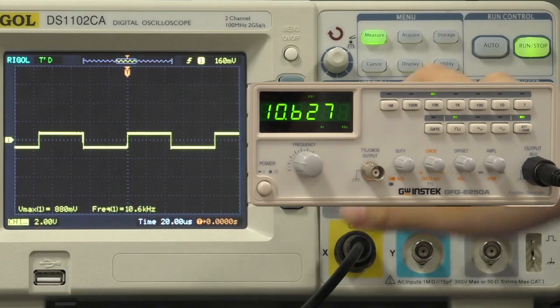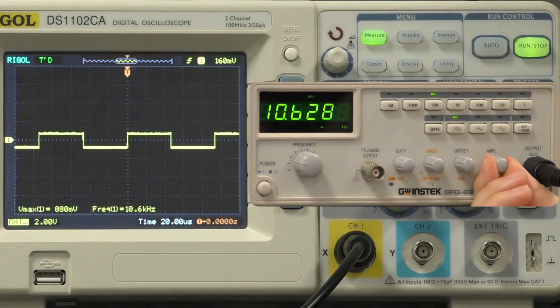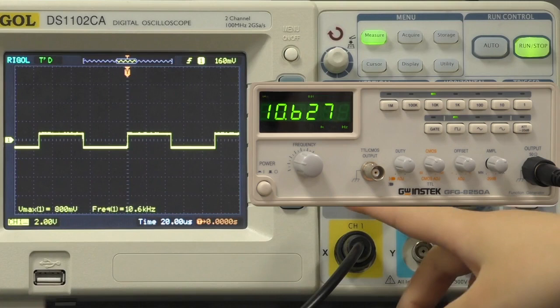What you can also do is the amplitude button, just pull it out. Once you pull it out, that will do exactly the same thing and it also takes 20dB off.